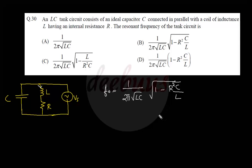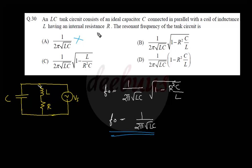We can verify by cross-checking: if R equals 0, the resonant frequency should reduce to 1/(2π√LC). Option C gives infinity when R equals 0, so it's wrong. Both B and D reduce to 1/(2π√LC) when R equals 0, but since there's a squared R term related to the inductor resistance, the answer is option B.